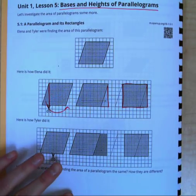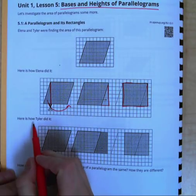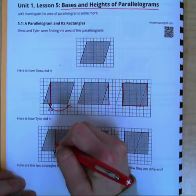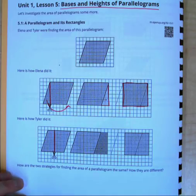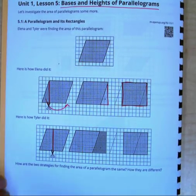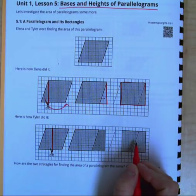And then she could do length times width. Tyler on the other hand, he also decomposed it, but he did it a little bit differently. Here is where he chose to cut, and same thing, he rearranged it, moved it on over to make a rectangle. So then he could find the area of the rectangle.